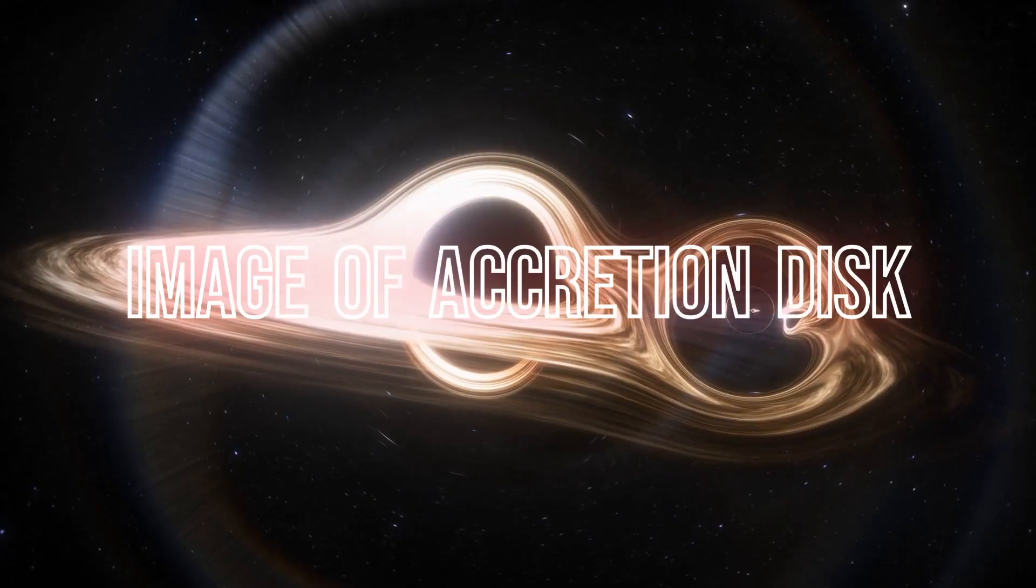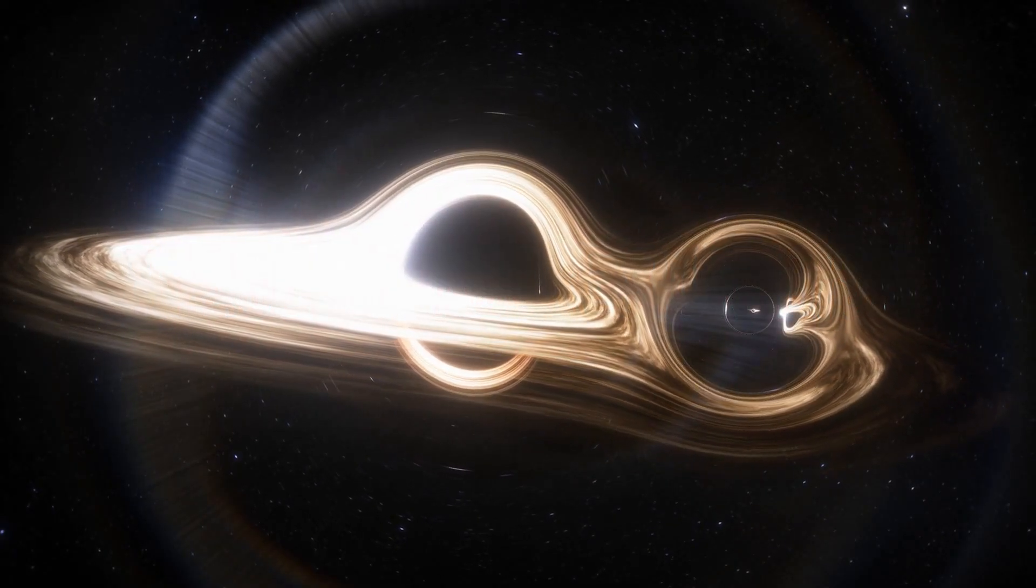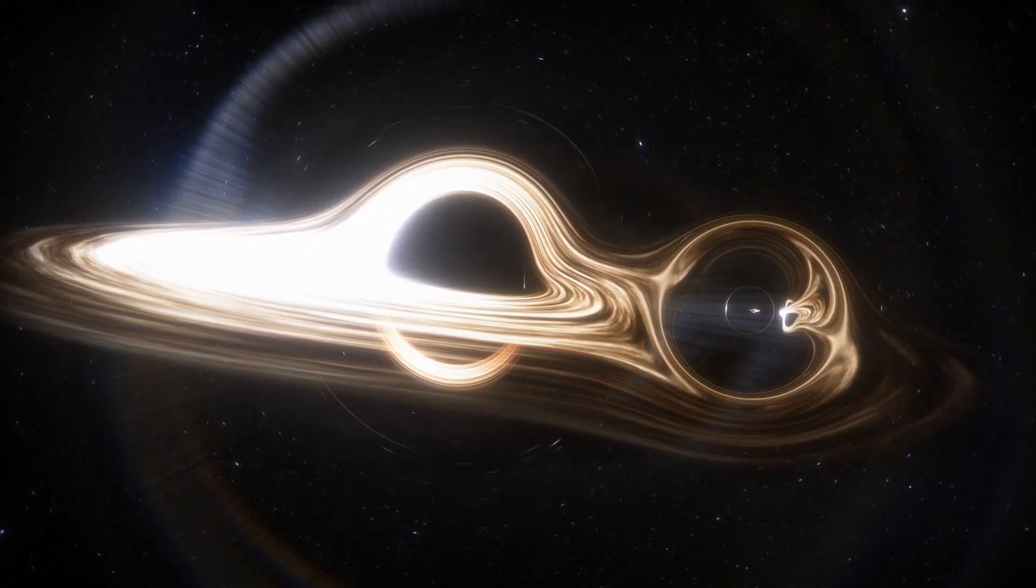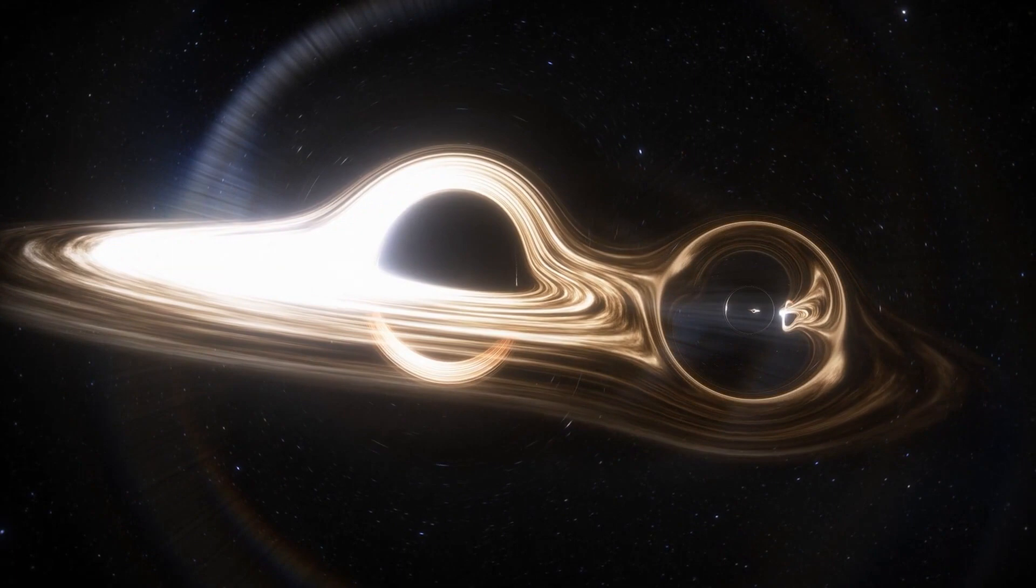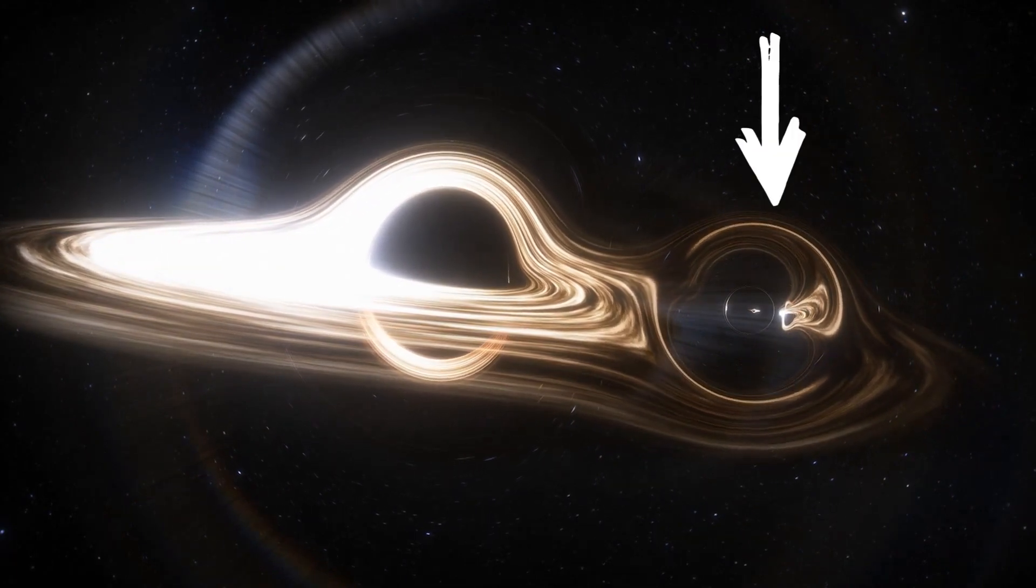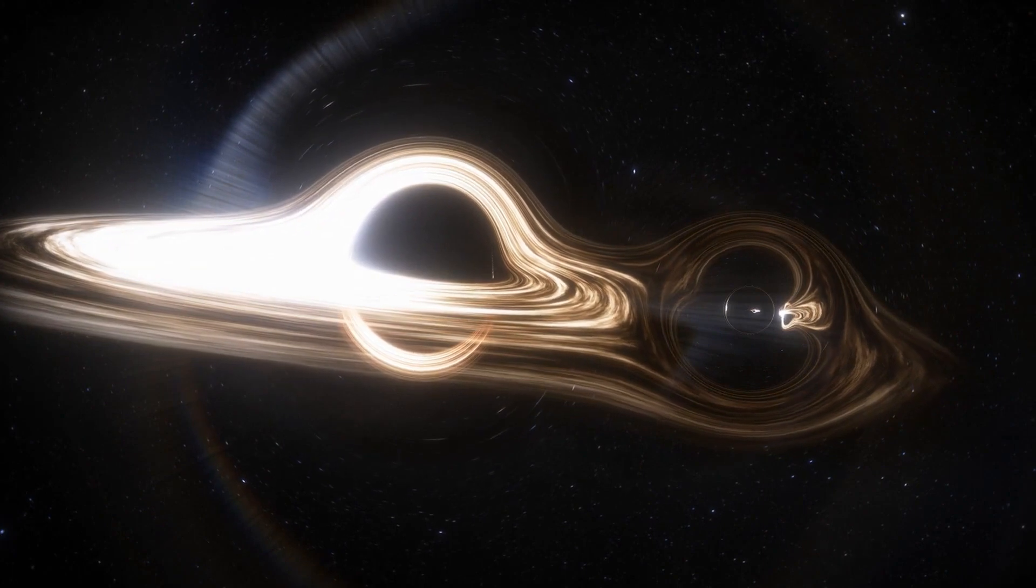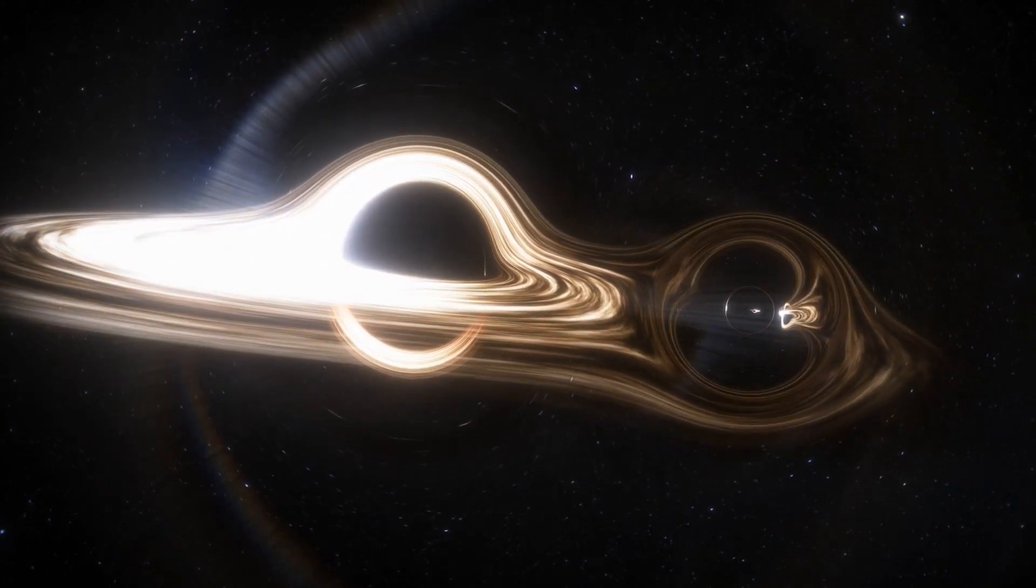Additionally, we have observed the presence of accretion discs around black holes. As matter gets pulled into a black hole, it forms a swirling disc that emits tremendous amounts of energy, including X-rays. These emissions have been detected and studied extensively.